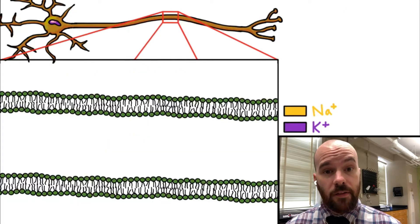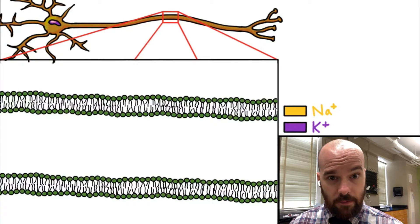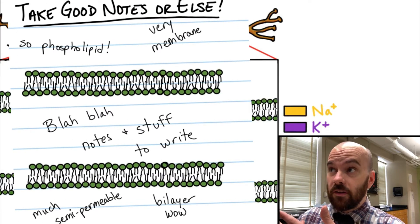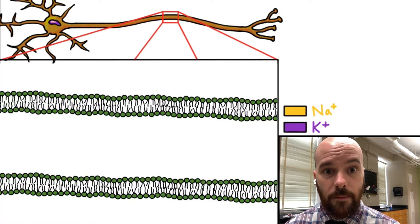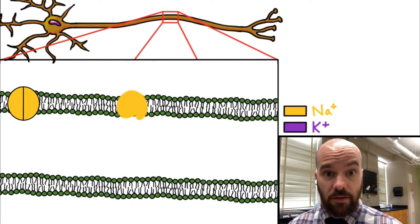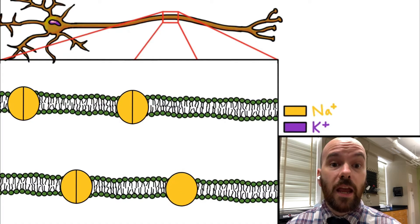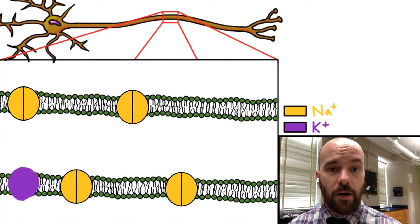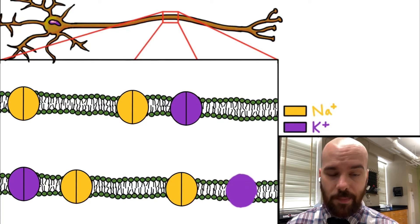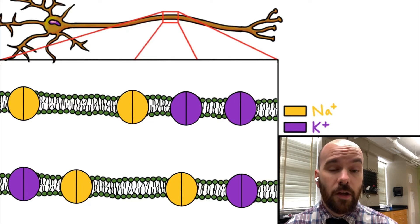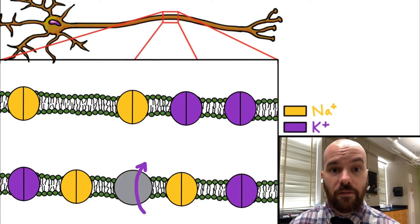If you're taking notes on this video, the diagram on the side probably isn't what you want to write down — I'll show you note slides after each stage. Along the membrane are protein channels that allow certain ions to pass in or out of the cell, and they're selective for specific ions. In yellow on our diagram are sodium channels — they only allow sodium, or Na+ ions, to pass in or out. In purple are potassium channels — they only allow potassium, or K+ ions, in or out.